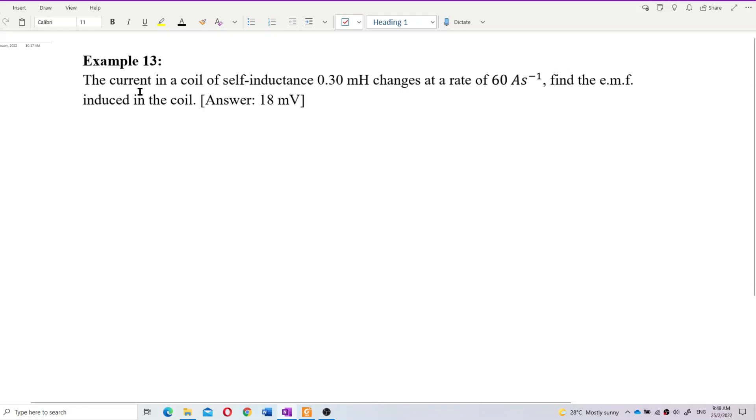The current in a coil of self-inductance 0.3 millihenry changes at the rate of 60 ampere per second. Find the EMF induced in the coil. This problem is about self-inductance. We have the formula and the values: L and 60 ampere per second.